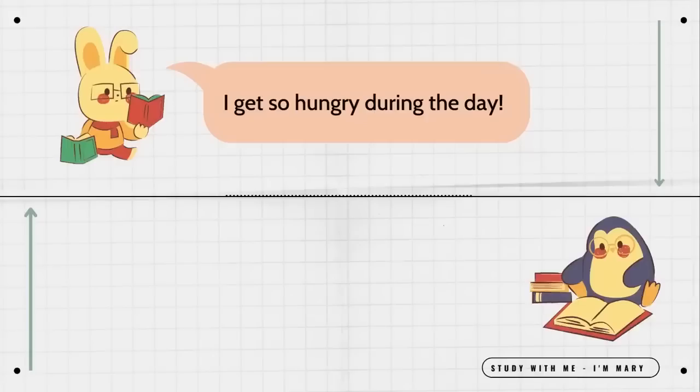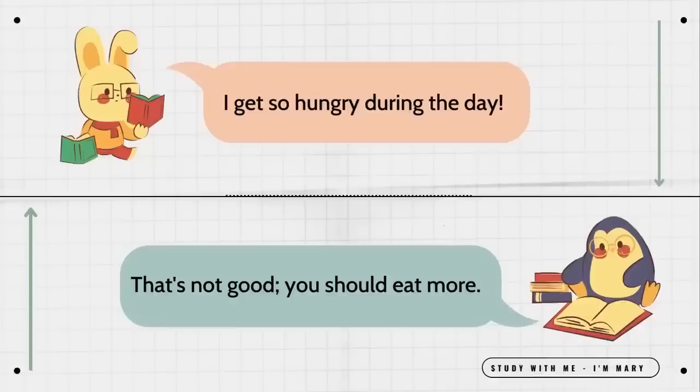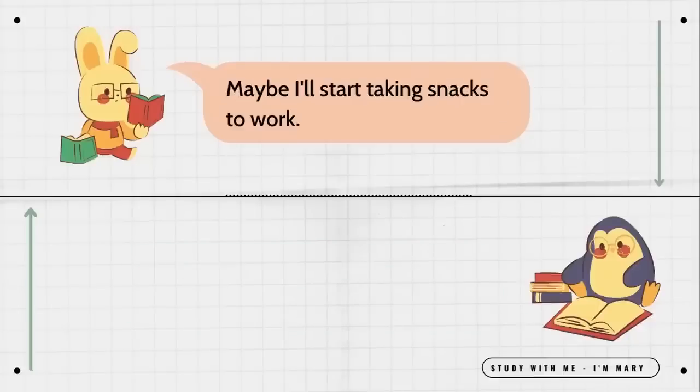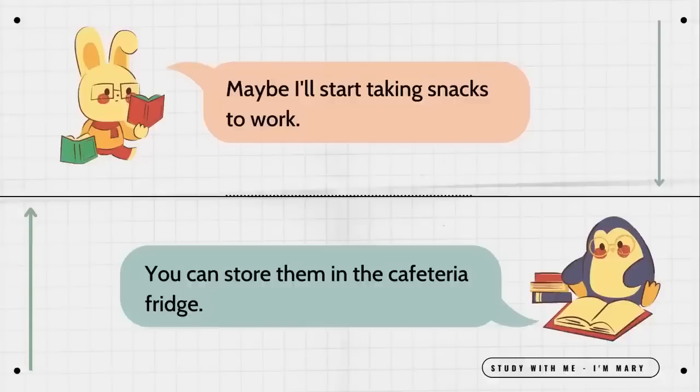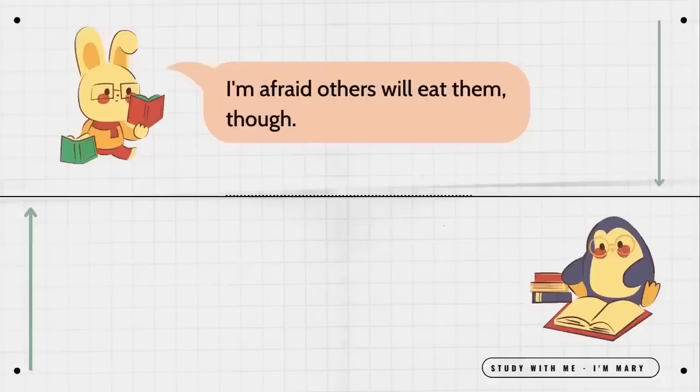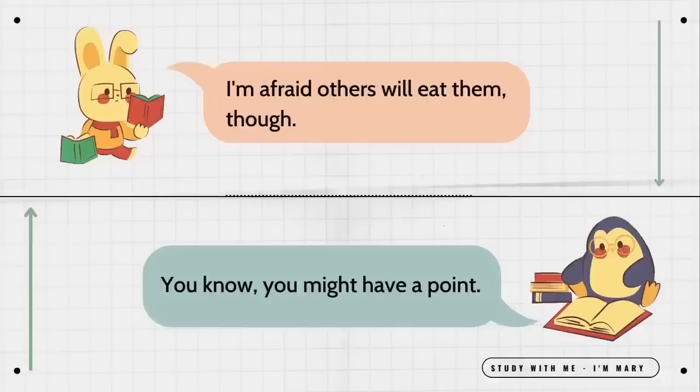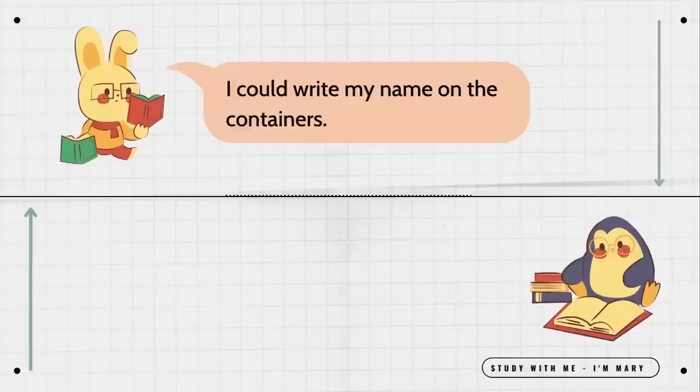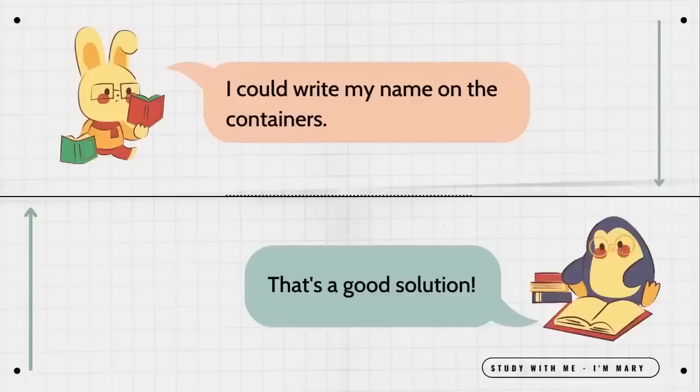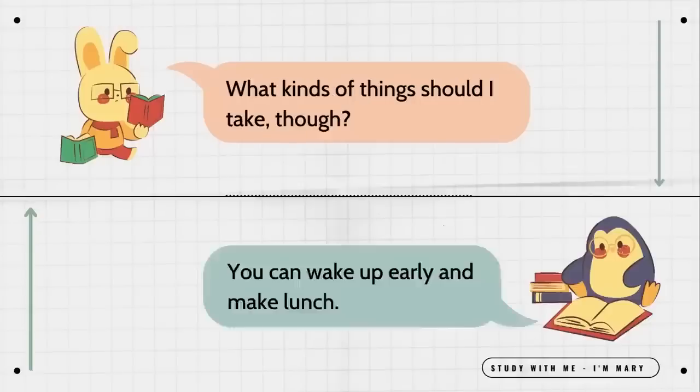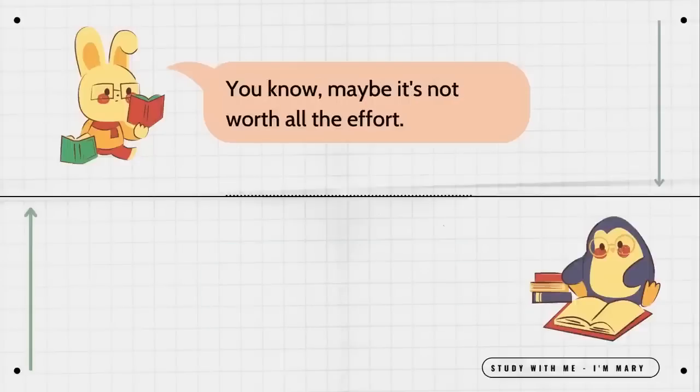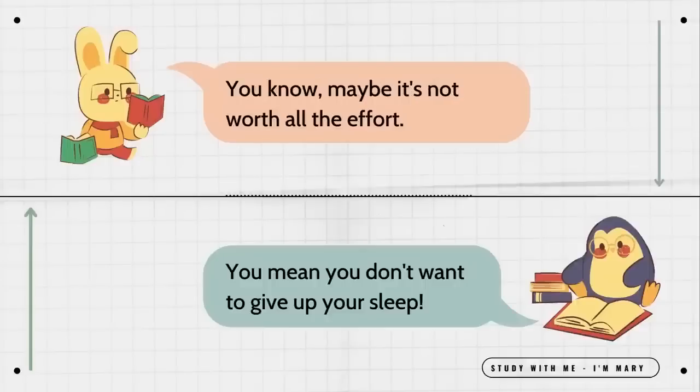I get so hungry during the day. That's not good. You should eat more. Maybe I'll start taking snacks to work. You can store them in the cafeteria fridge. I'm afraid others will eat them though. You know, you might have a point. I could write my name on the containers. That's a good solution. What kinds of things should I take though? You can wake up early and make lunch. You know, maybe it's not worth all the effort. You mean you don't want to give up your sleep.